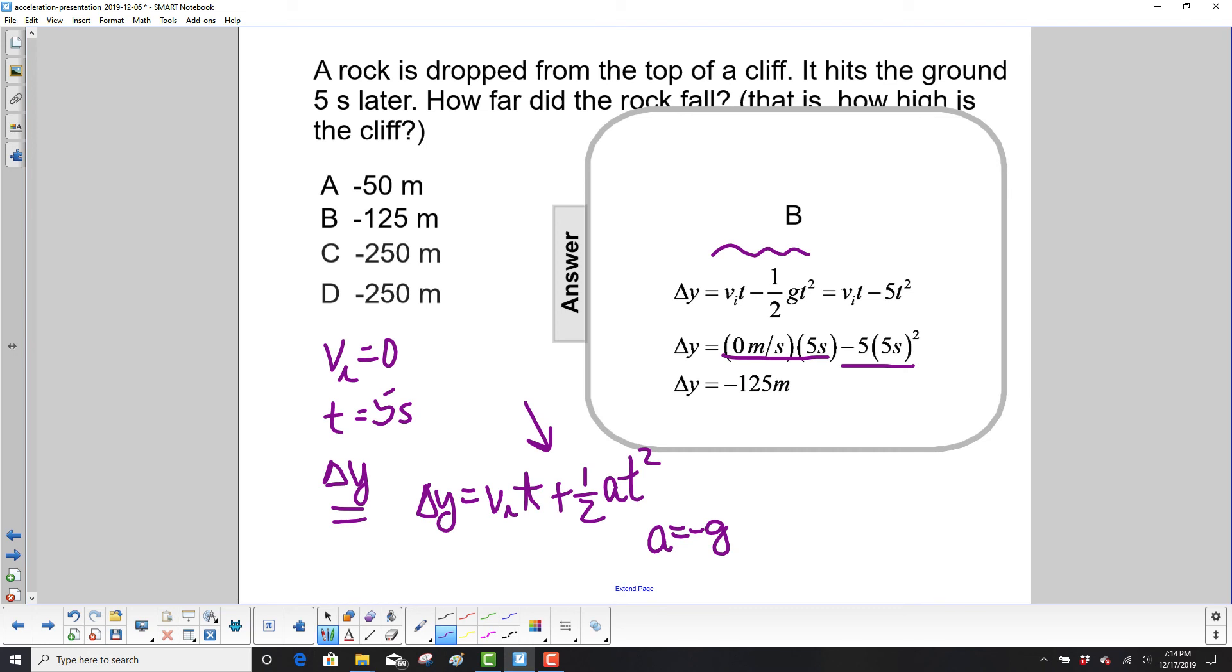We get delta y is negative 125 meters, so that means it's in the down direction from where we started on the cliff. So the cliff is 125 meters tall, but the rock dropped 125 meters, negative.